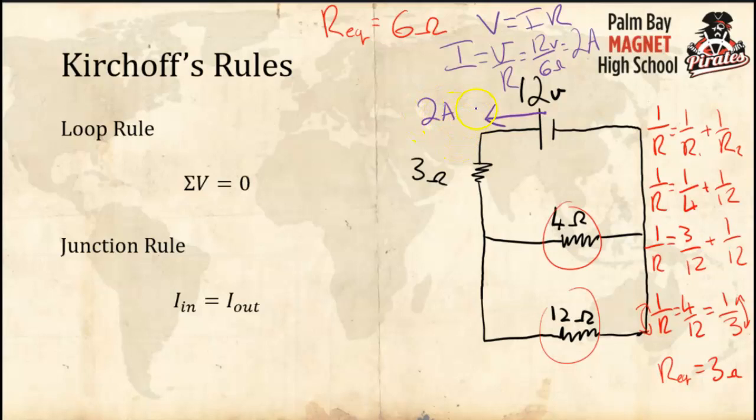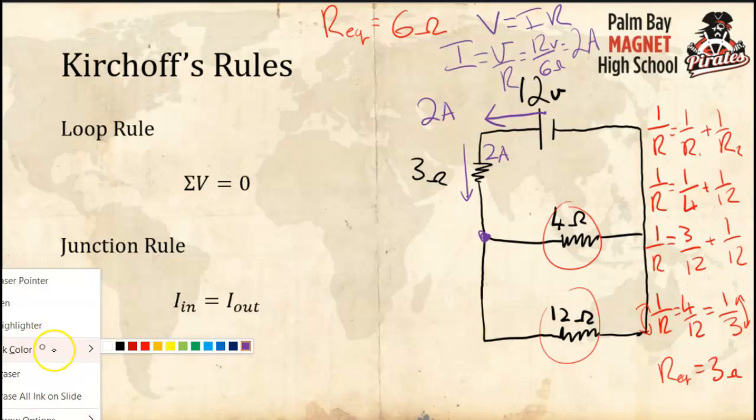This is where we solve what we can, when we can. There's a 2-amp current coming out of the battery, and since electrons aren't going to bunch up or spread out, there's also going to be a 2-amp current coming through the series resistor. The current only changes once we get to the junction, so all 2 amps flow through that 3-ohm series resistor.